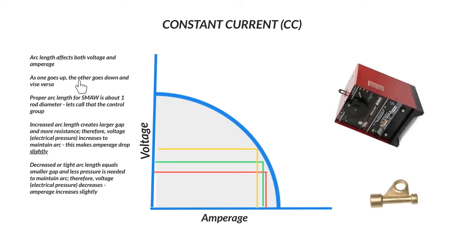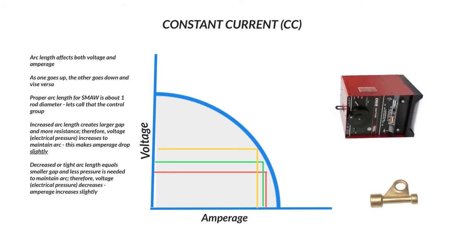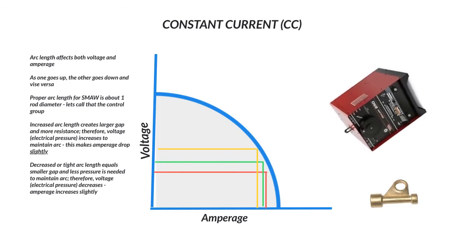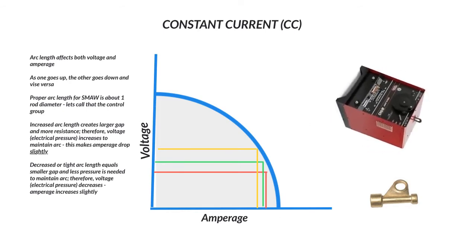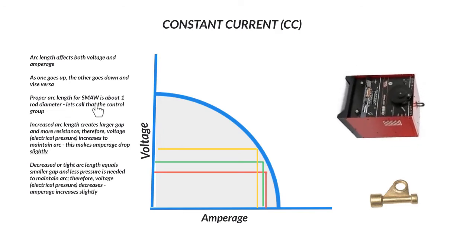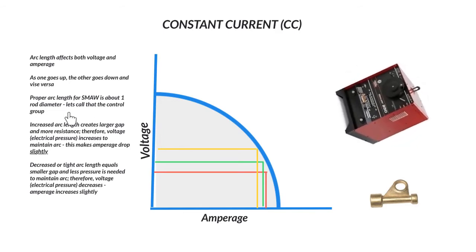As one goes up, the other one goes down and vice versa. So if voltage goes up, amperage goes down. If amperage goes up, voltage goes down. So an example is the proper arc length for stick is about one rod diameter. Let's call that the control group.